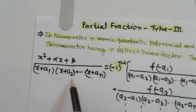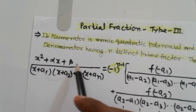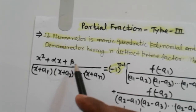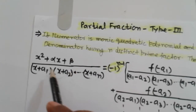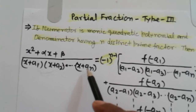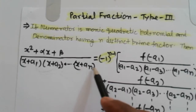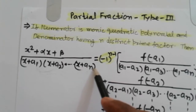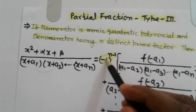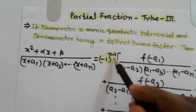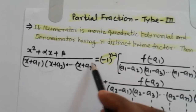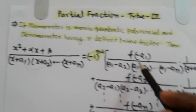Consider the left hand side where x squared plus alpha x plus beta is a monic polynomial. The denominator is (x plus a1)(x plus a2)...(x plus an) having n distinct prime factors, with sign term minus 1 raised to n minus 1, where n is the number of distinct factors.